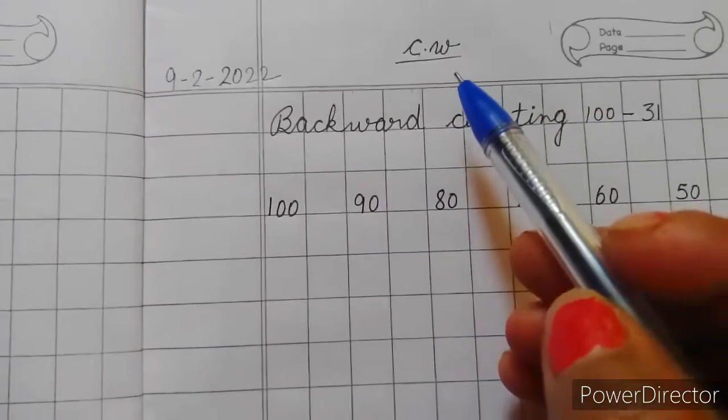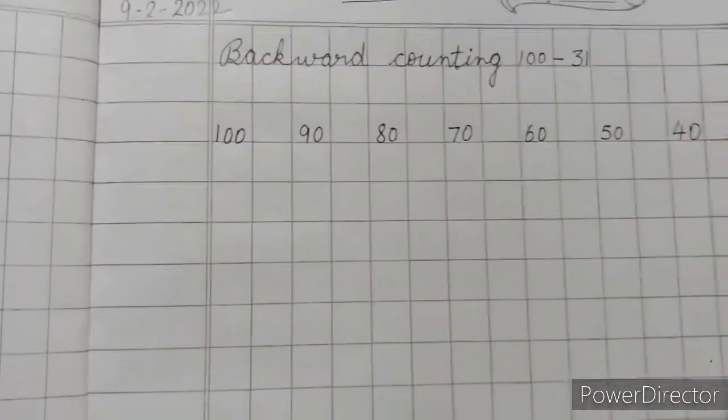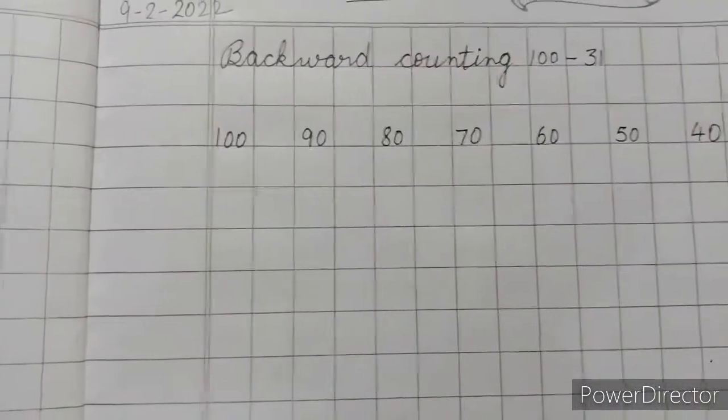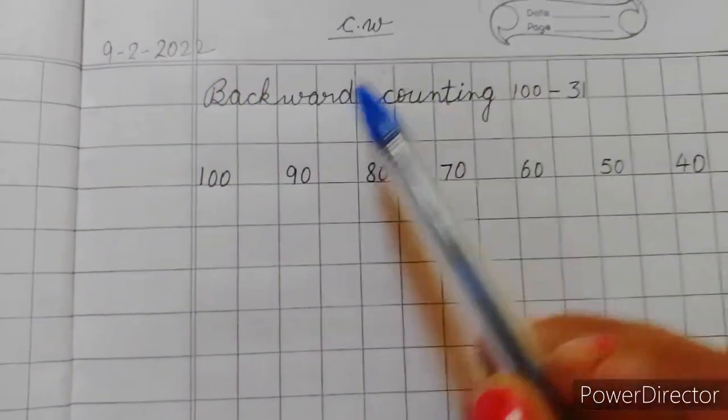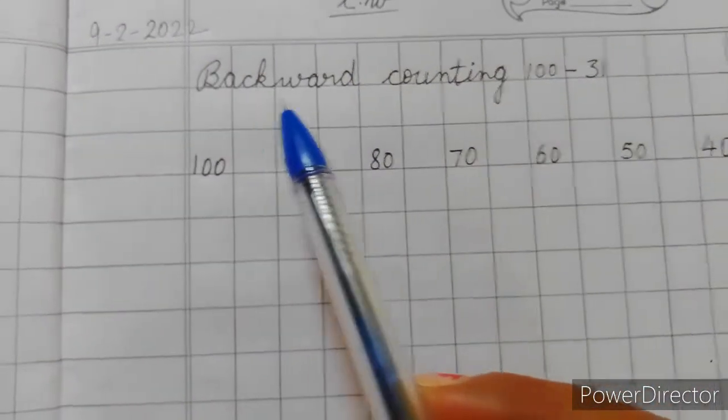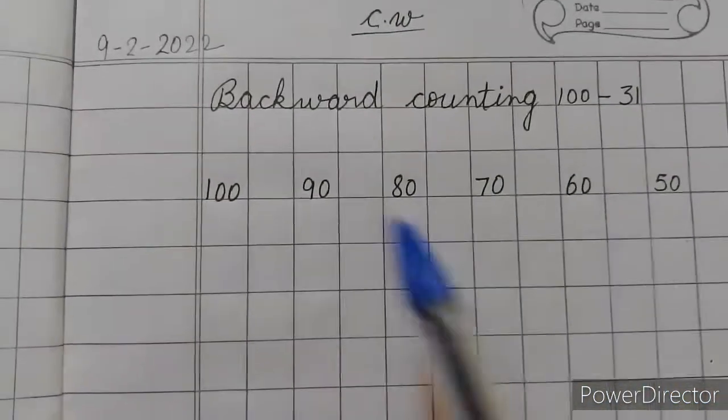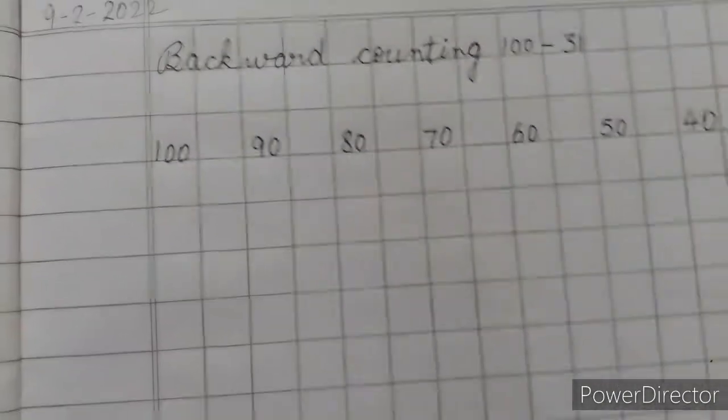Then write CW or as I have told you RW also you can write because this is our revision work. Okay children, so first of all date, then RW, then after write the matter. In today's class we will revise backward counting 100 to 31.